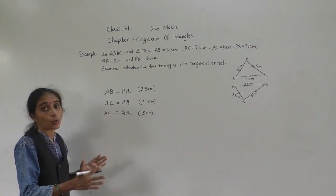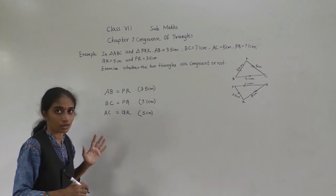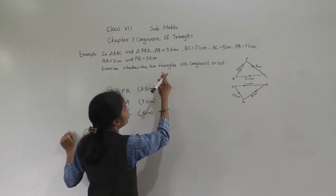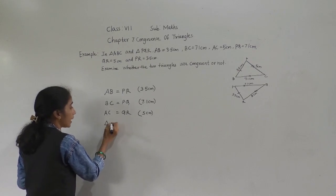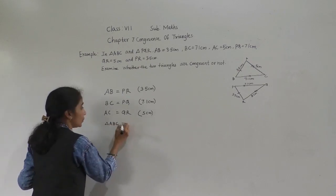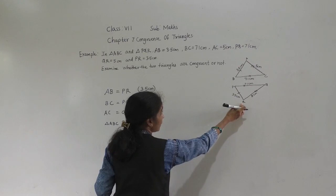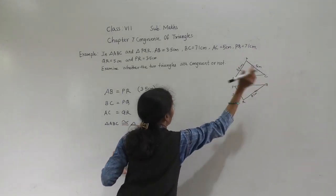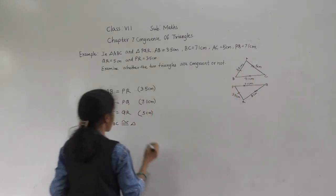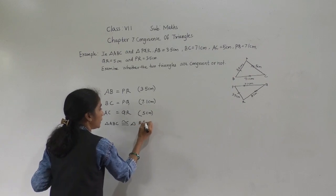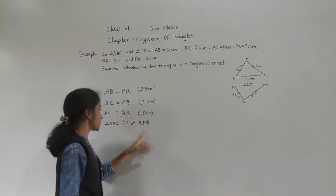These both triangles are congruent with which criteria? With SSS, because the sides are equal. These both triangles are congruent — triangle ABC is congruent with triangle RPQ.